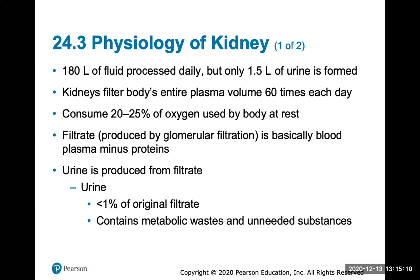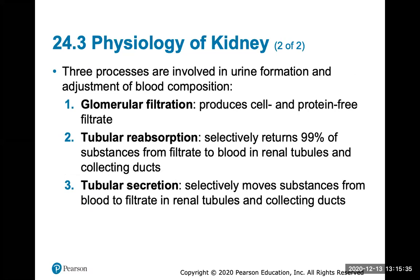Urine is produced from filtrate and is less than one percent of the original filtrate, because what is initially filtered through the glomerulus gets reabsorbed back into the blood capillaries — either the vasa recta or the peritubular capillaries. Urine contains metabolic wastes, urea, and any unneeded substances like drugs or toxins. The three main processes involved in urine formation and adjustment of blood composition are glomerular filtration, tubular reabsorption, and tubular secretion.